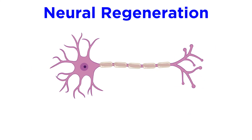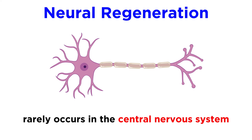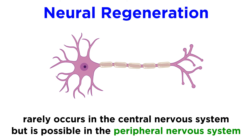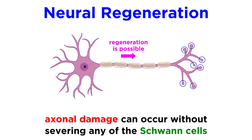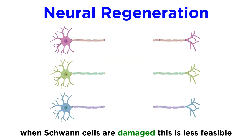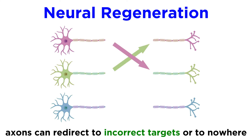Then there is the opposite process, neural regeneration. This is tougher for mammals than for other animals, and almost never occurs in the central nervous system, but it happens sometimes in the peripheral nervous system. This is because axonal damage can occur without severing the Schwann cells, so some regeneration can often result in the neurons regaining the ability to transmit information to their targets. If Schwann cells are damaged, this becomes less and less feasible, and axons can regenerate to reach incorrect targets or no target at all.